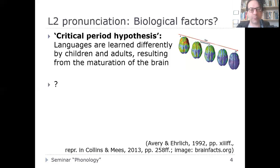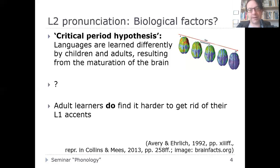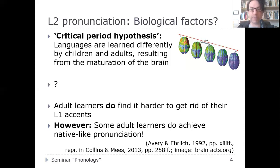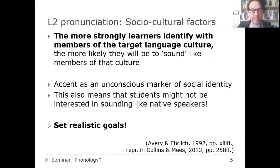We can say that adult learners do find it harder to get rid of their L1 accents than children do, but some adult learners still achieve native-like perfection — so it's probably much more a matter of the individual. There doesn't really seem to be a fixed time window in which everybody's brain has the capacity and then loses it completely. It's not that simple, but biological factors do seem to play a role.